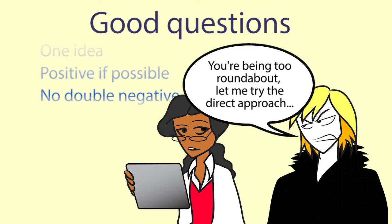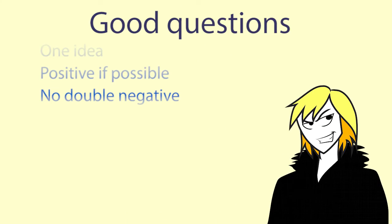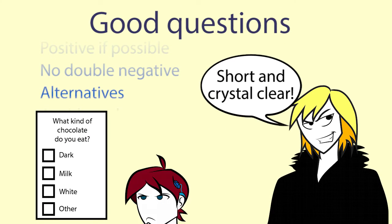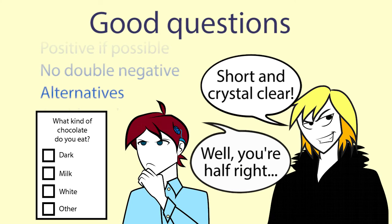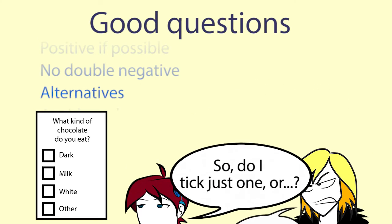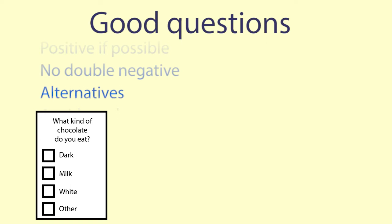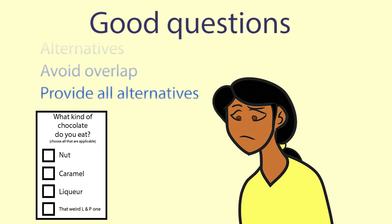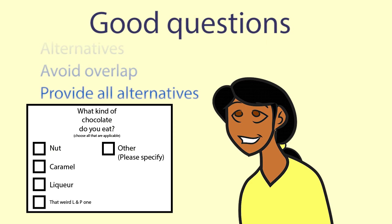In closed questions you need to be careful about the alternatives you provide. You need to make it clear whether the person is supposed to choose one alternative or as many as they wish. And you need to make sure that the alternative choices do not overlap, and that they cover the whole range of alternatives. Often a category 'other' can be used for alternatives you might have missed.